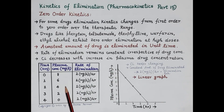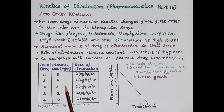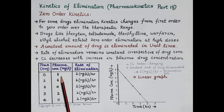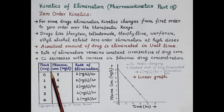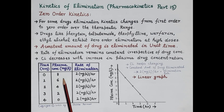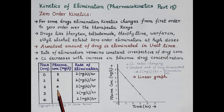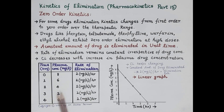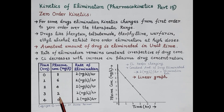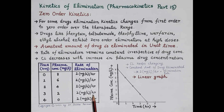Look at this table. Let's consider zero order elimination kinetics where a constant amount of drug is eliminated in unit time — say 2 mg/L of drug is eliminated every hour. At time zero, plasma concentration is 8 mg/L and the rate of elimination is 2 mg/L/hr. After 1 hour, since a constant 2 mg/L is eliminated, plasma concentration becomes 6 mg/L and rate of elimination remains constant at 2 mg/L/hr. After 2 hours, 2 mg/L is again eliminated, so plasma concentration becomes 4 mg/L. After 3 hours, plasma concentration becomes 2 mg/L with rate of elimination still constant at 2 mg/L/hr.